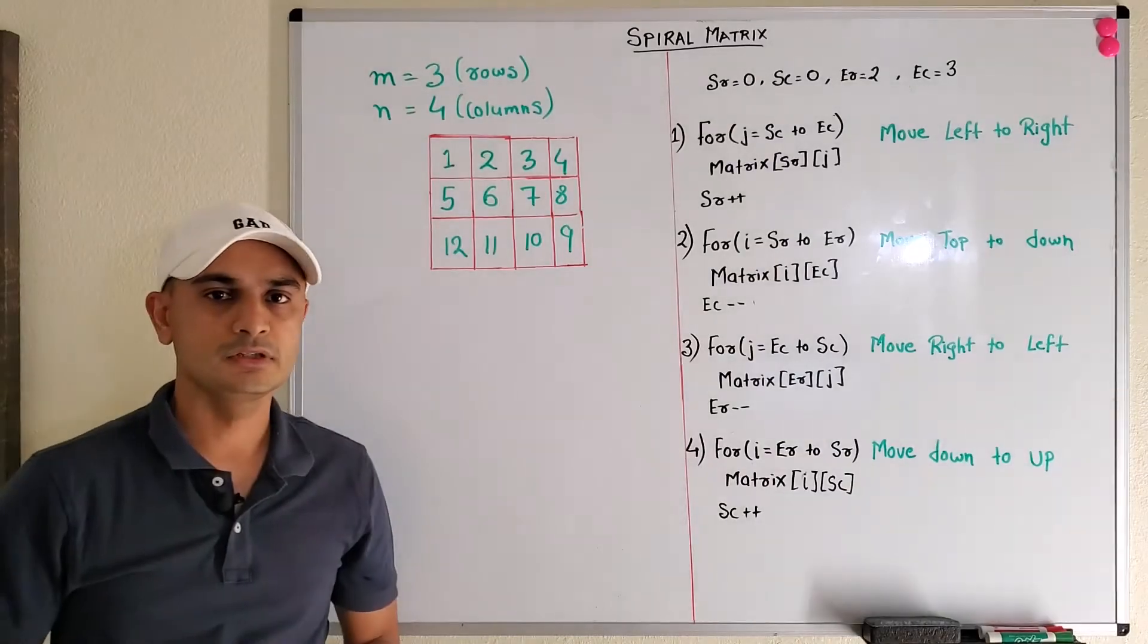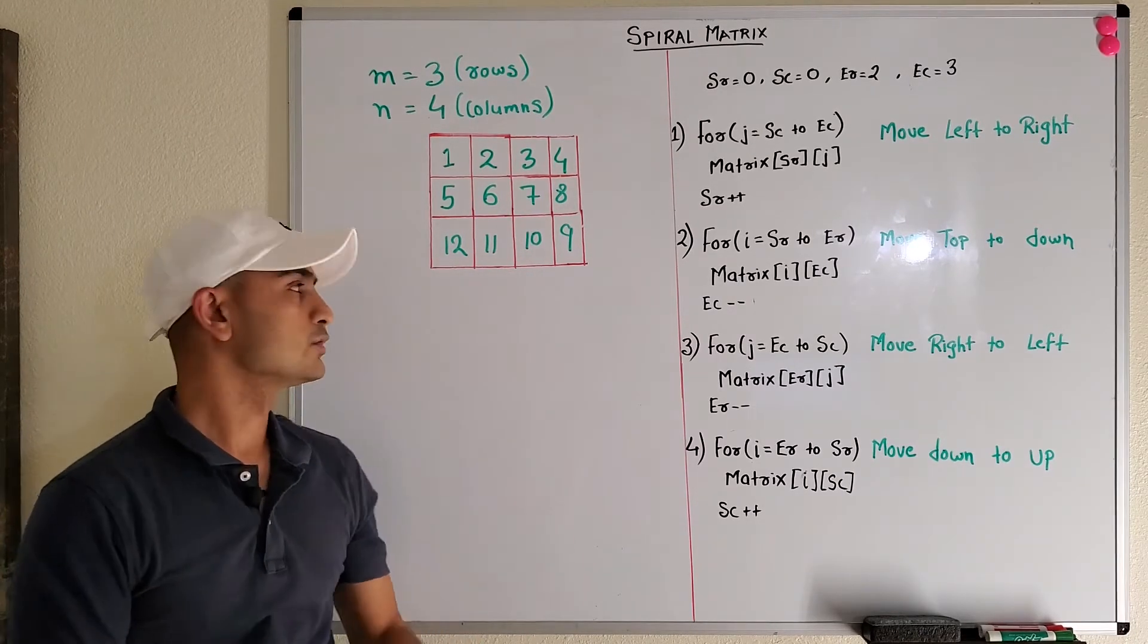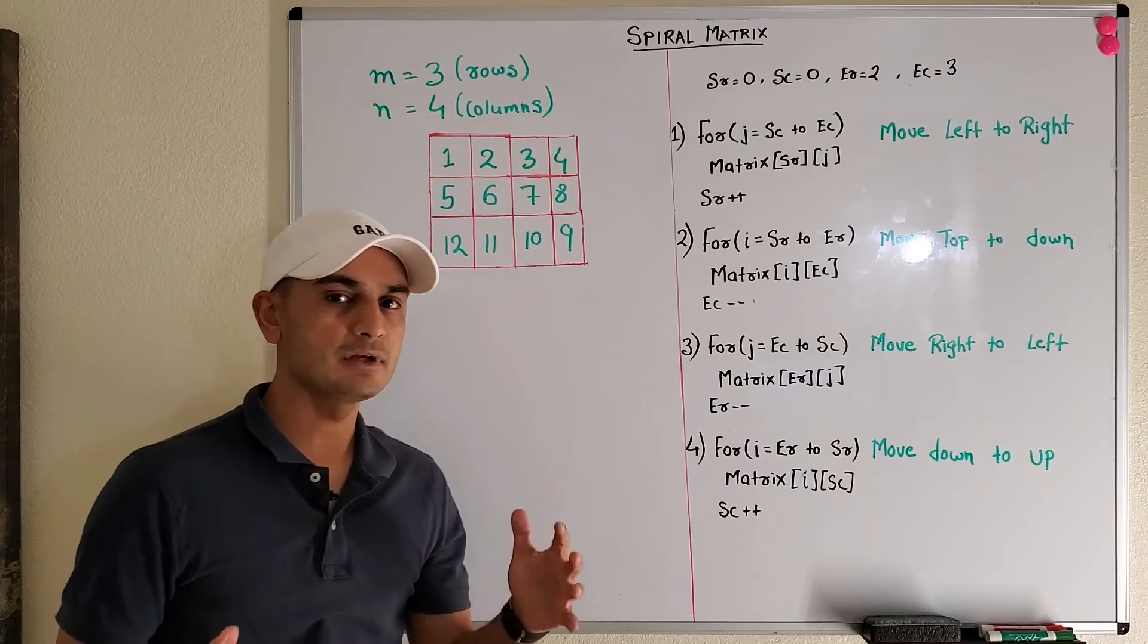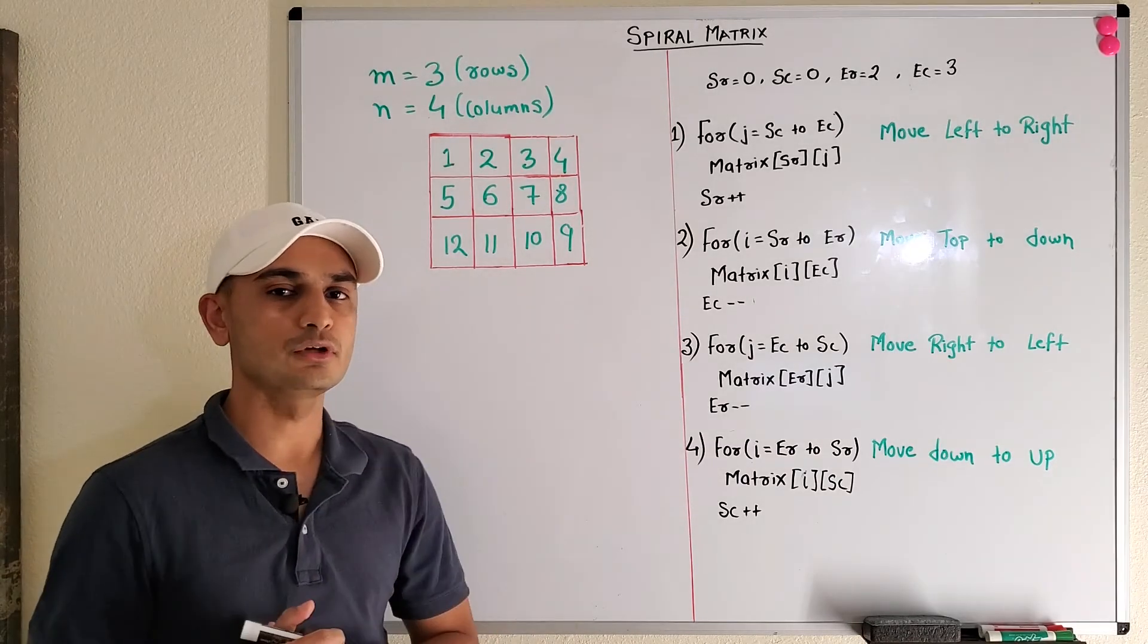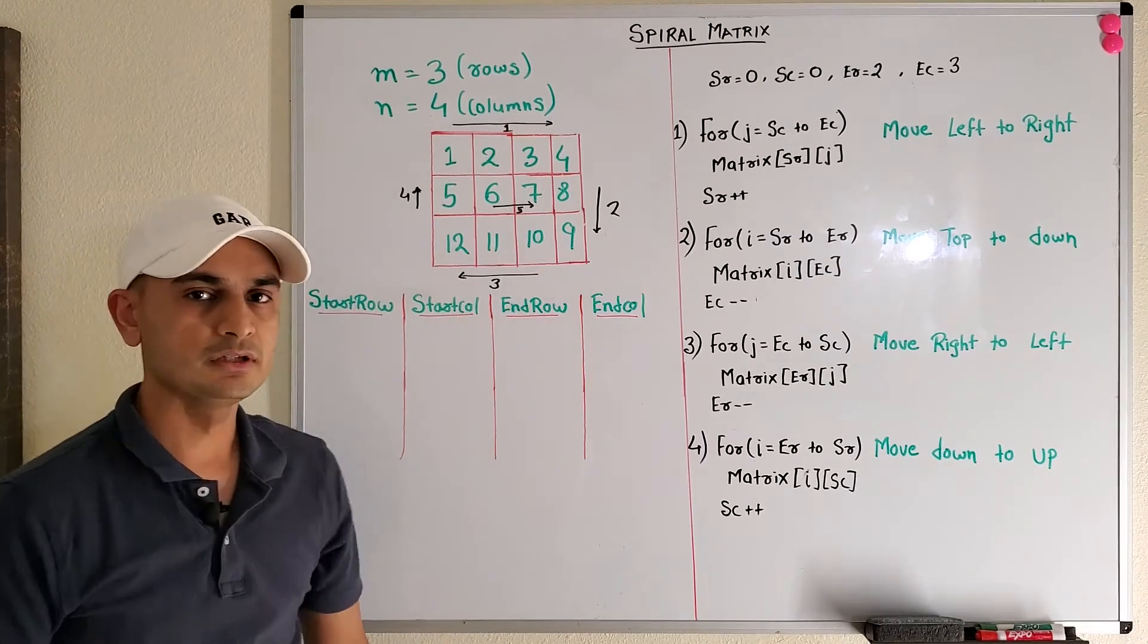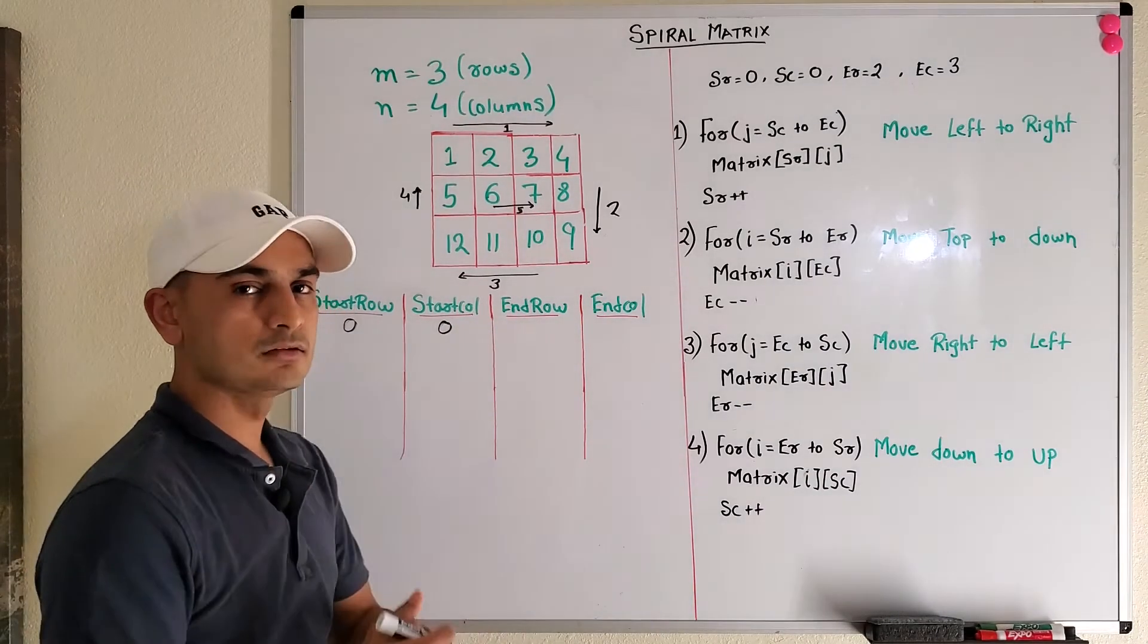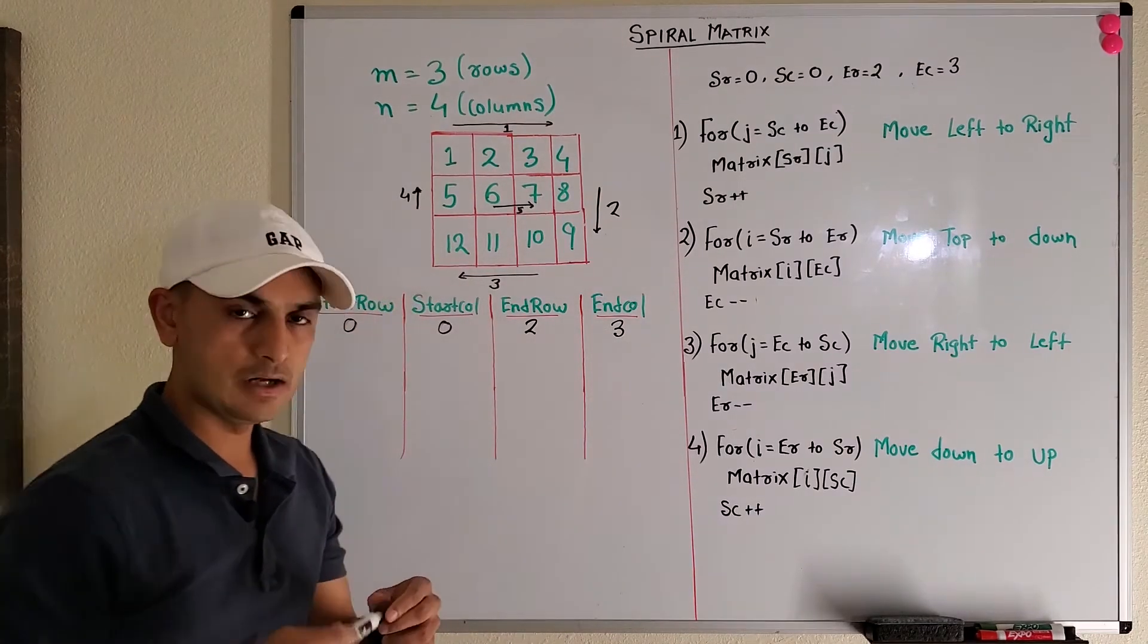This is our matrix, m by n, straight from the problem description. As I said, this problem doesn't require any complex data structure or any special technique like BFS, DFS, dynamic programming, none of those. We just need to take care of some simple integer indexes. These are the four integers that we would be using: start row, start column, end row, end column. Start row and start column begin with zero, and since end row and end column are zero-based indexed, we have three rows so we'll mark this as two, and we have four columns so we'll mark this as three.